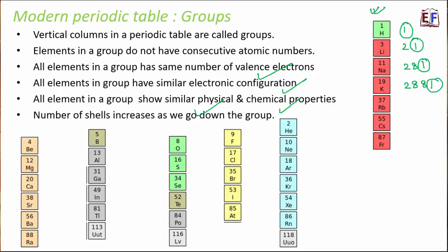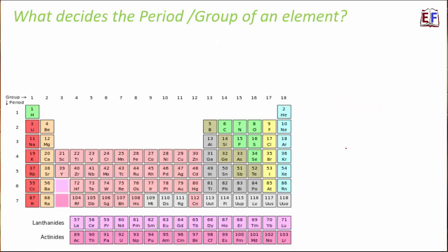The number of shells increases as we go down a group. Hydrogen has electrons only in the first shell; lithium has electrons in two shells; sodium in three; potassium in four. As we go down the group, the number of shells increases, and therefore the atomic size also increases.